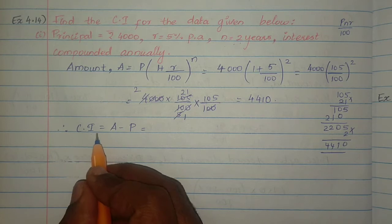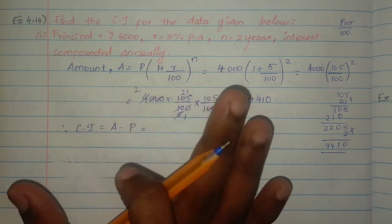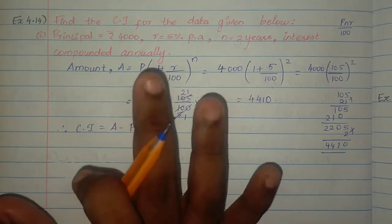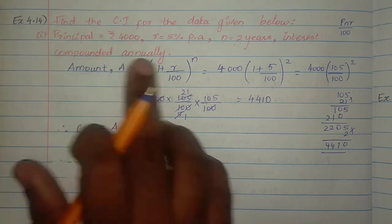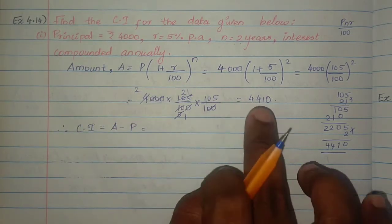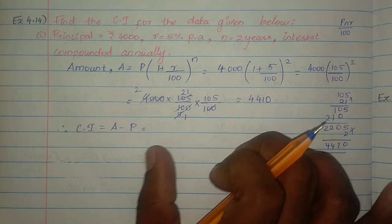Compound interest equals Amount minus Principal amount. The principal amount is 4000 and the amount is 4410.